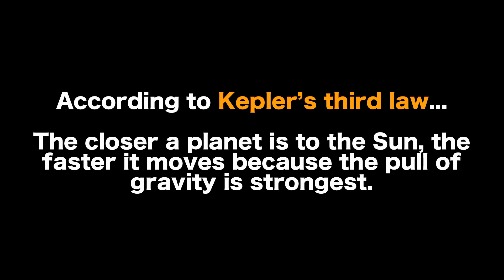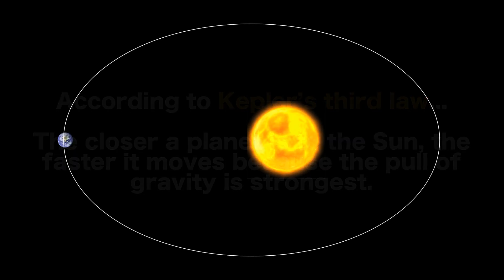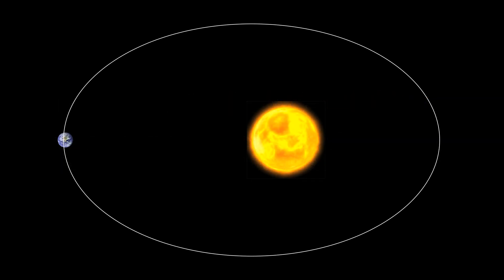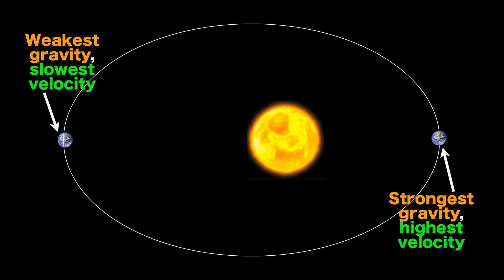Now according to Kepler's third law, the closer a planet is to the sun, the faster it moves, because the pull of gravity is the strongest. So you'll notice the position of Earth in this picture, Earth is going to be traveling a little bit slower, because it's a little bit farther away. If the Earth was all the way to the right-hand side of this picture, it would actually be traveling a little bit faster, because it was a little bit closer. So you have the weakest gravity and the slowest velocity, and you have the strongest gravity with the highest velocity.